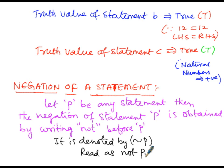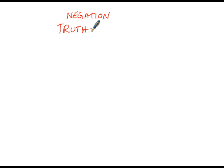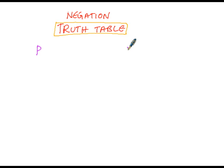Let us form a truth table for the negation connective. In this negation truth table, we consider a statement P and its negation ¬P. A statement has two possibilities: it may be either true or false. For one statement there are two possibilities. For two statements, four possibilities; for three statements, eight possibilities.